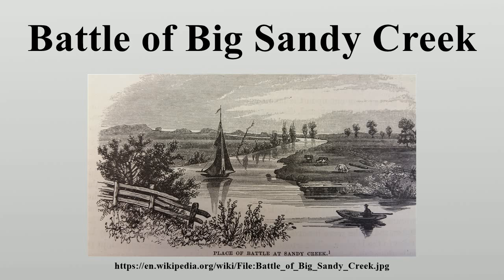At the American shipyard in Sackets Harbor, two brigs — the USS Jefferson and the Jones — and a frigate, the Superior, waited for armament and rigging necessary for their launch. The supplies needed to outfit the ships had been transported from the Brooklyn Naval Yard in New York City to Albany, New York, and from Albany up the Mohawk River to Wood Creek and Oneida Lake, finally arriving at the Oswego River.